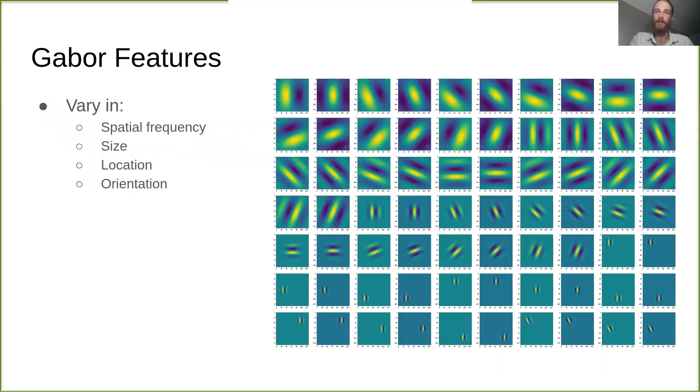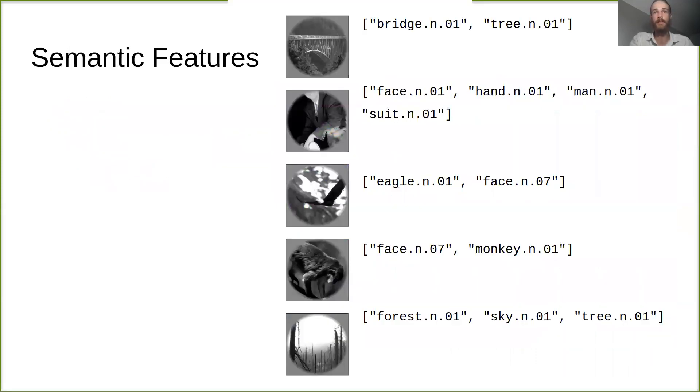To fit an encoding model, first we created a set of low-level visual features for each stimulus. This was done by generating a range of different Gabor filters and applying them to each image. Additionally, we hand-generated multiple semantic labels for each image describing the objects and scene features.